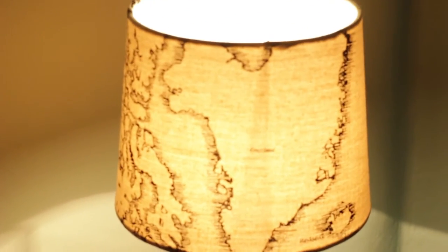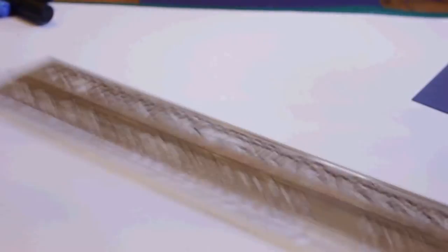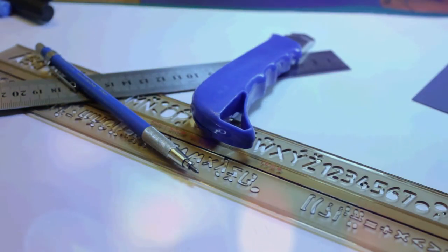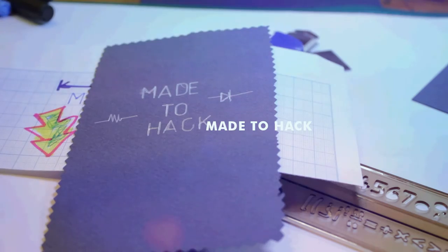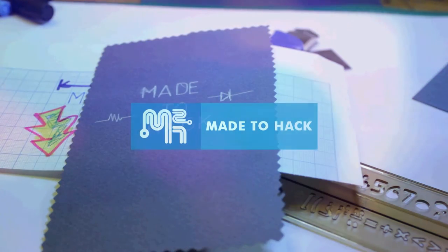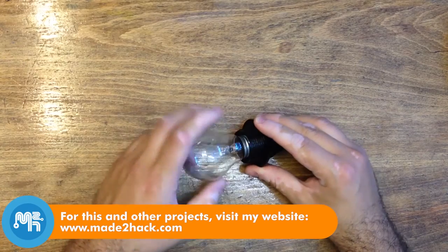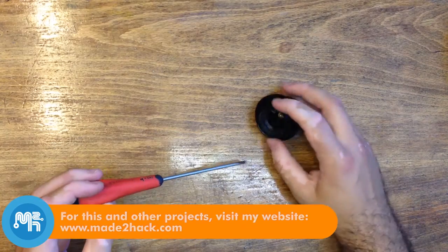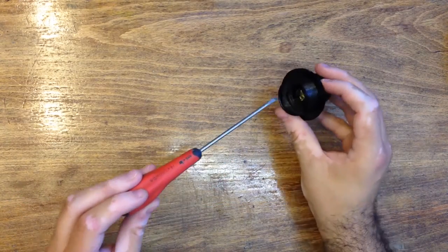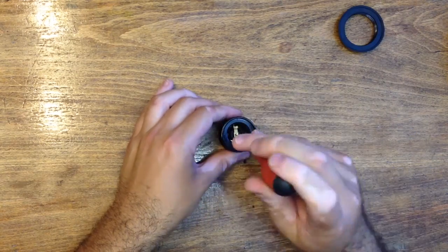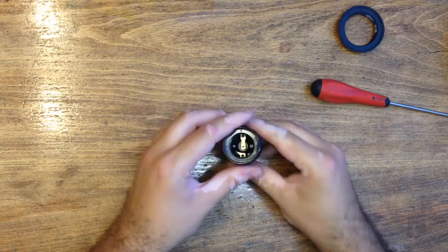Today on Made to Hack I install a lamp holder on this lamp. This is an E27 lamp holder, also known as an Edison screw. It works with traditional incandescent bulbs, CFL bulbs and newer LED bulbs.